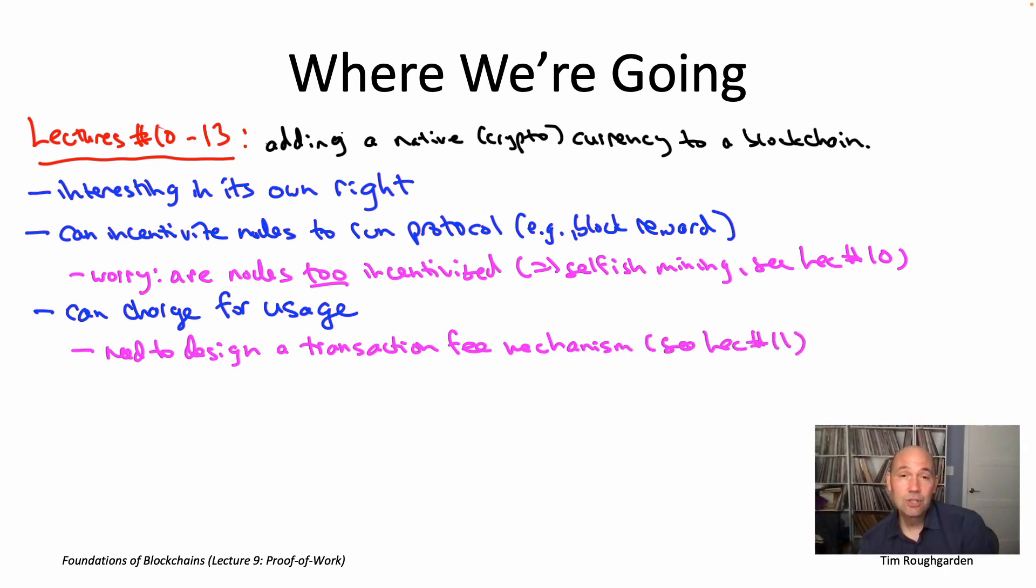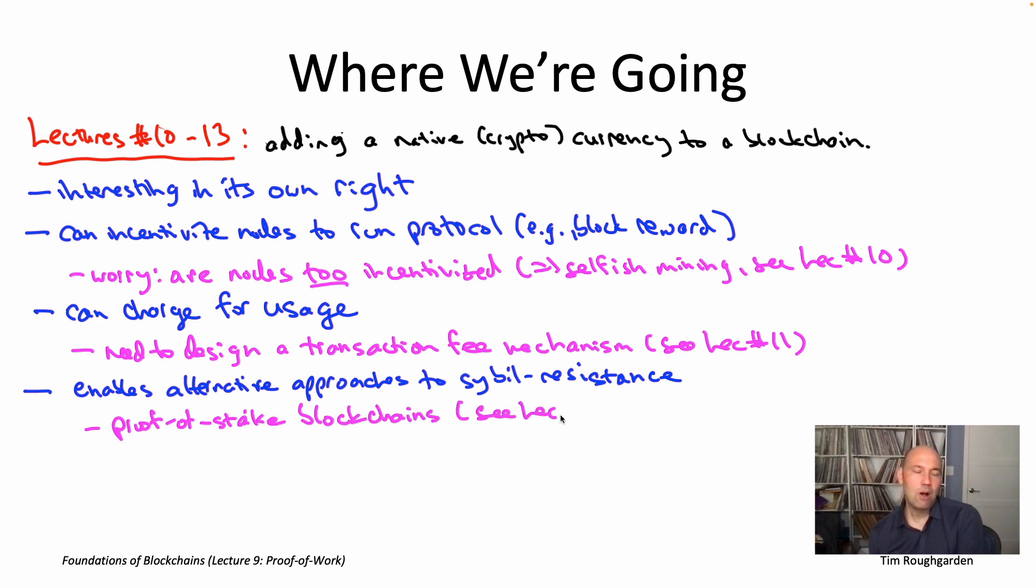Having a native currency also unlocks alternative approaches to Sybil resistance beyond proof of work. And in particular, proof of stake, which will be the subject of lecture number 12. That's a different, kind of incomparable, Sybil resistant mechanism that's used in a number of major blockchains today. That obviously only makes sense if you have a native currency in which nodes can stake.